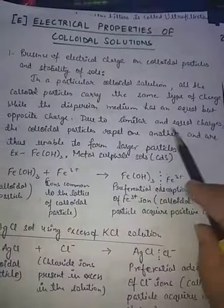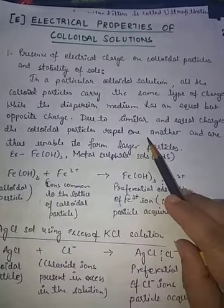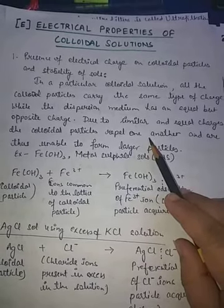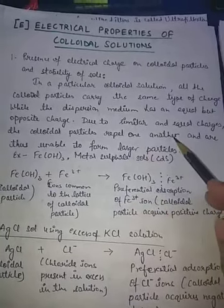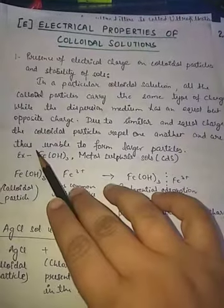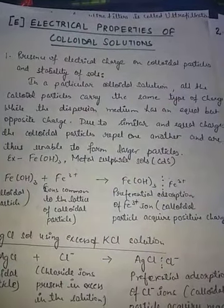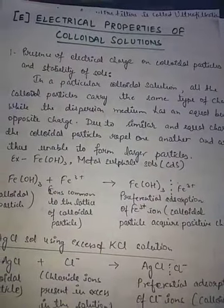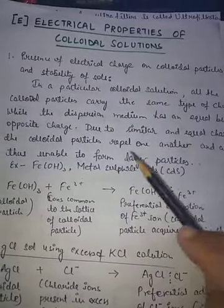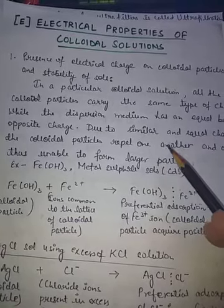Since all the colloidal particles have similar type of charges, they repel each other. Because of this continuous repulsion, they are unable to form larger particles — they cannot aggregate or coagulate to form larger particles.